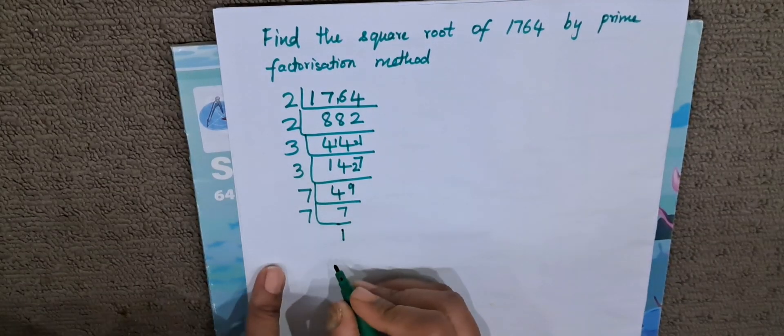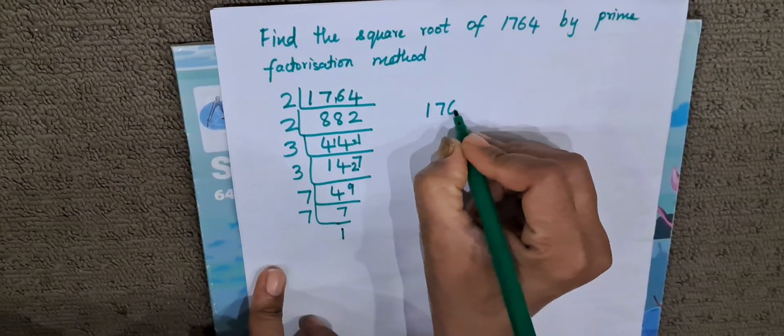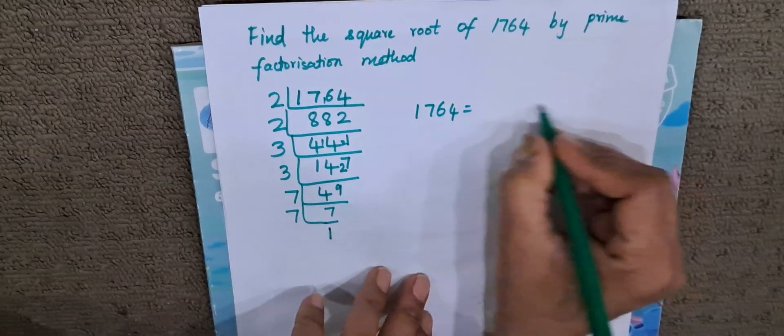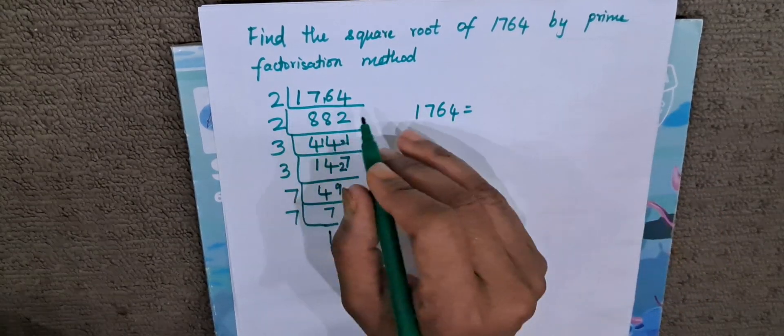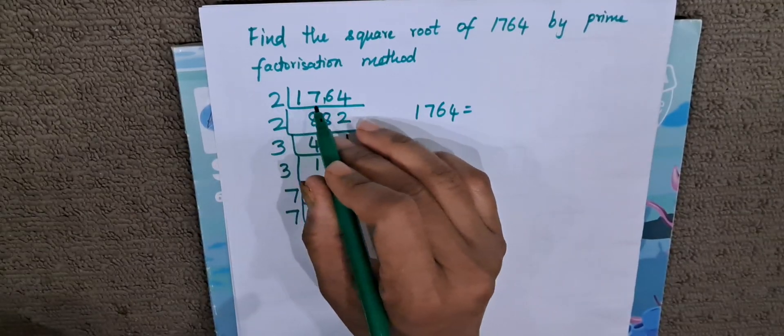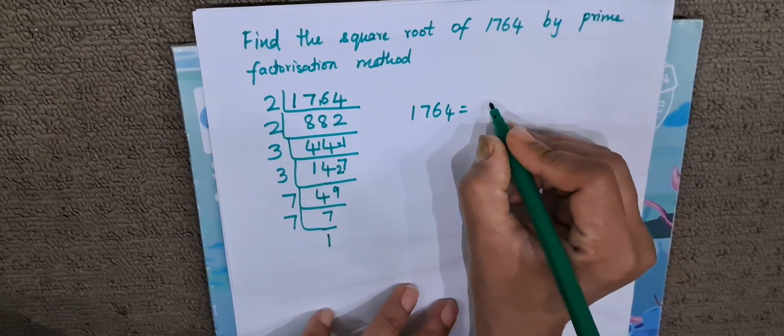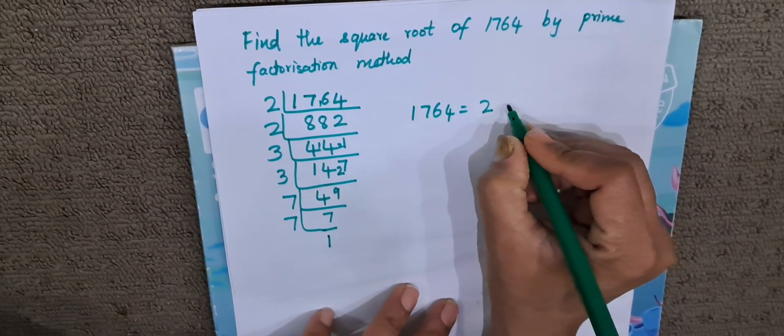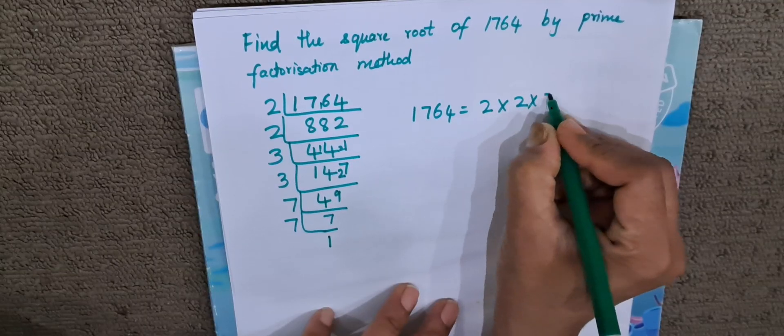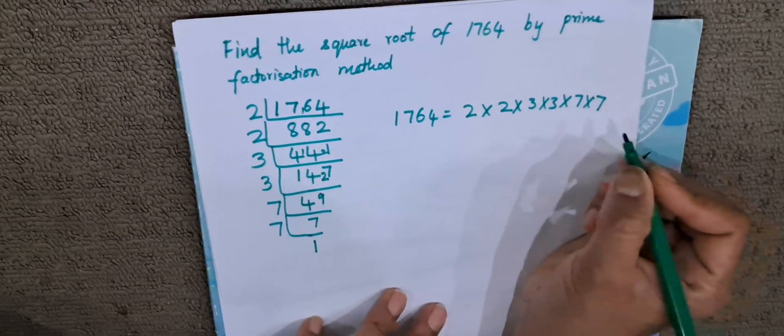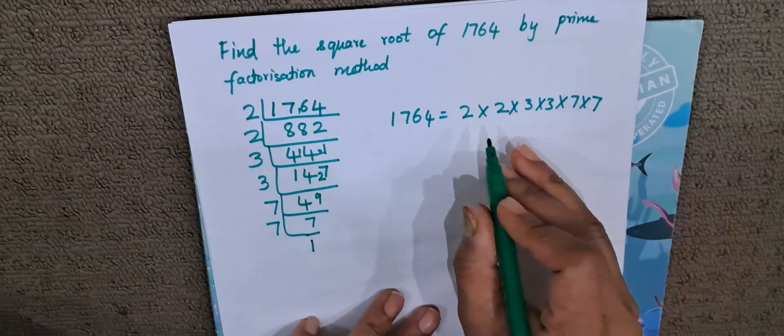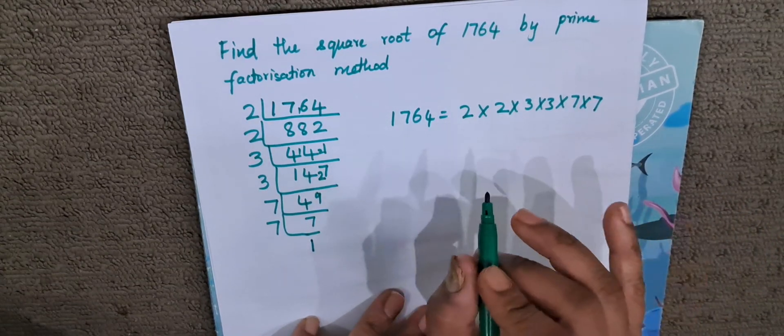The multiples of 1764 we will write down. Factors. The factors of 1764, sorry not the multiples, they are called as factors. The factors of 1764 are 2 into 2 into 3 into 3, 7 into 7. Now these are the factors of 1764.